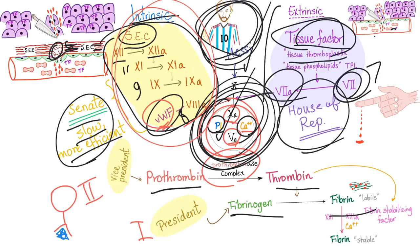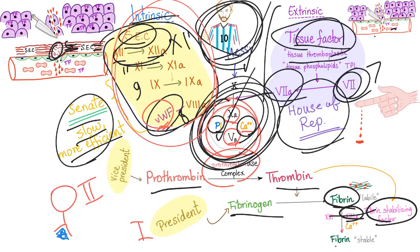We've missed something: the fibrin stabilizing factor. The biggest number was 12, so let's call it number 13. Factor 13 stabilizes the fibrin into more stable fibrin by cross-linking the fibrin fibers. If you look carefully, you can see that calcium is involved in many steps — that's why calcium aids coagulation.